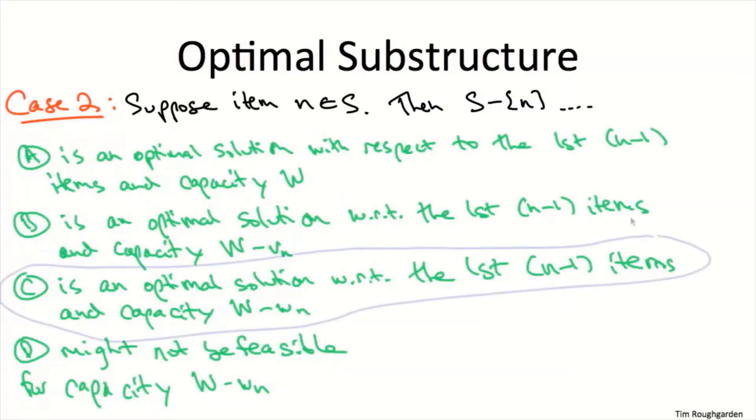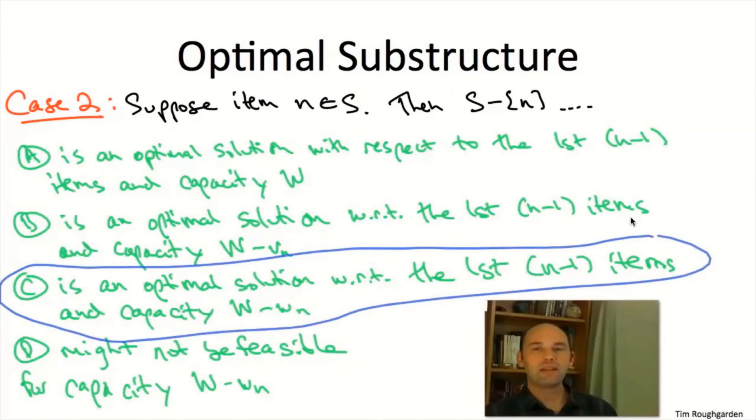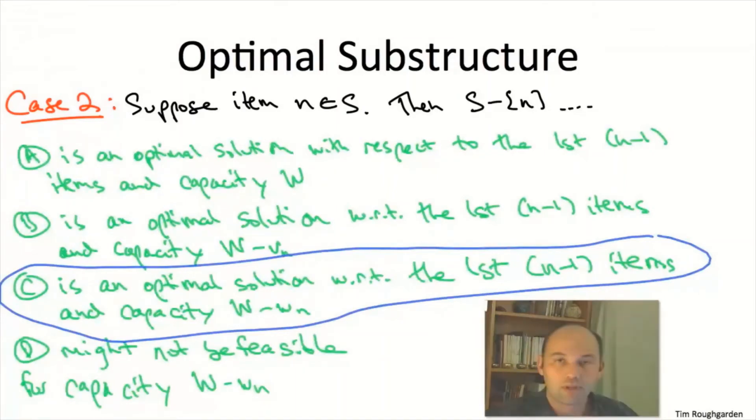All right, so the correct answer is C. Back in the independent set problem, if we remove the rightmost vertex, then what's left is optimal for the residual problem we get by plucking off the rightmost two vertices. Here when we remove the nth item from the optimal solution S, the claim is what we get is optimal for the knapsack problem involving the first n-1 items and a residual knapsack capacity of W minus w_n. So the original knapsack capacity with space reserved or deleted for the nth item.